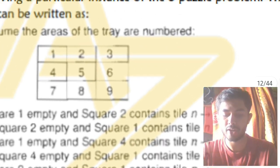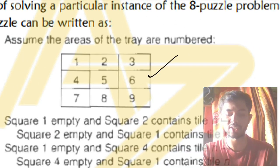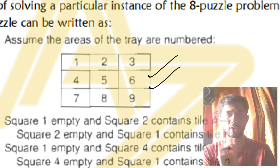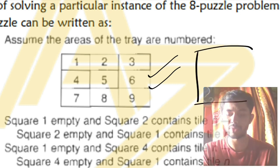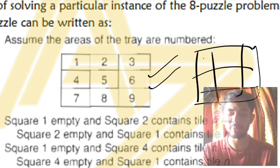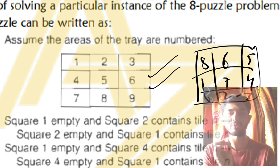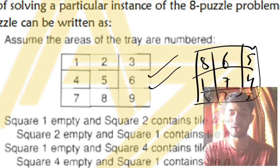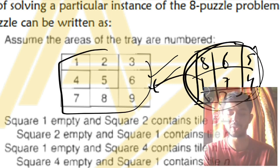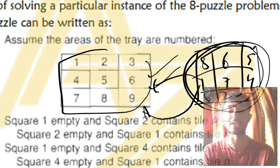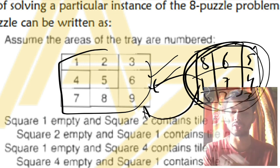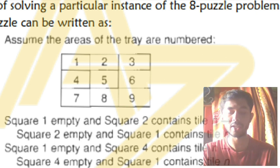In the eight-puzzle problem, you are given a jumbled configuration of numbers and your final goal state is a specific ordered arrangement. You start from the jumbled state and must reach the goal state — this is where backward reasoning is used, starting from the goal state back to the initial configuration.